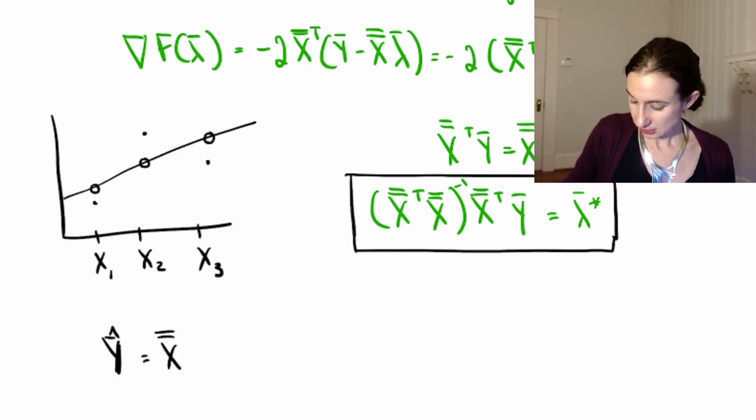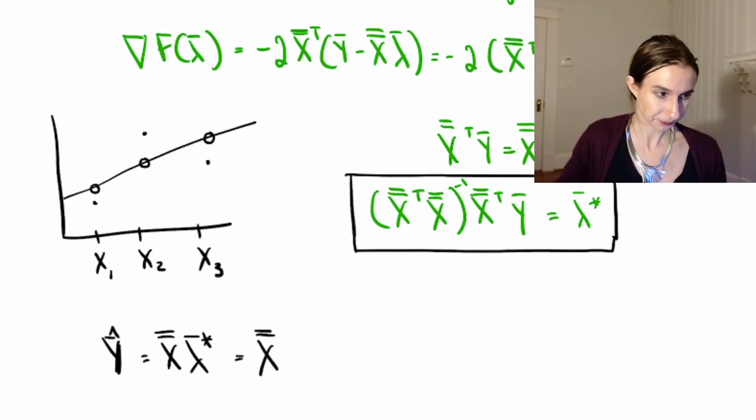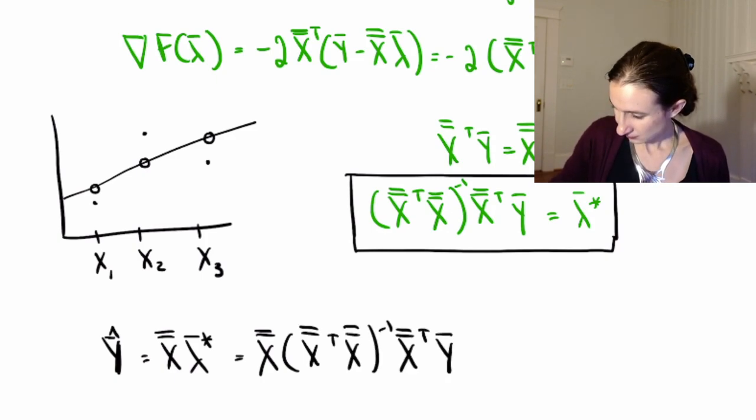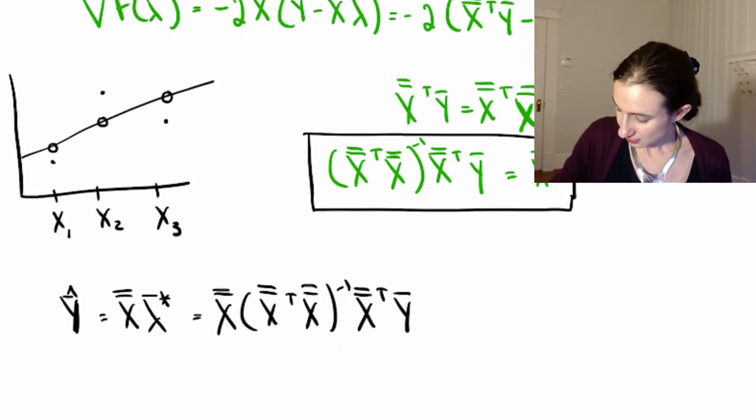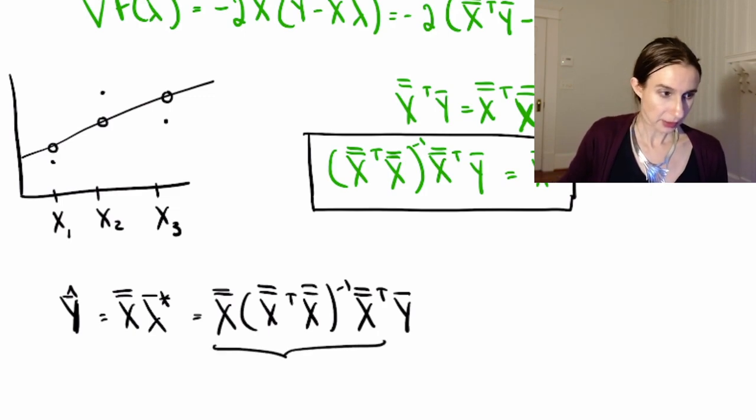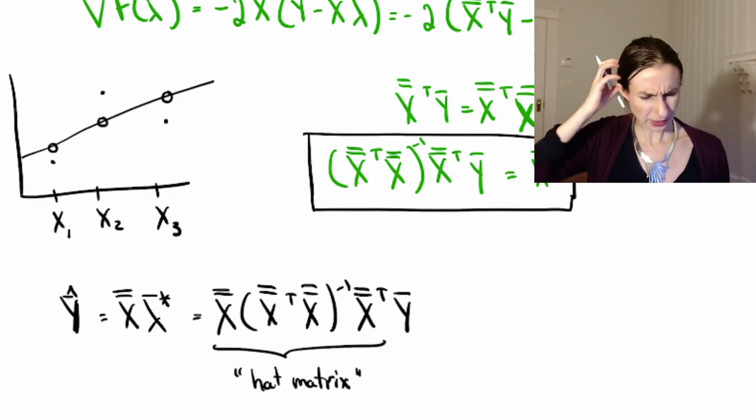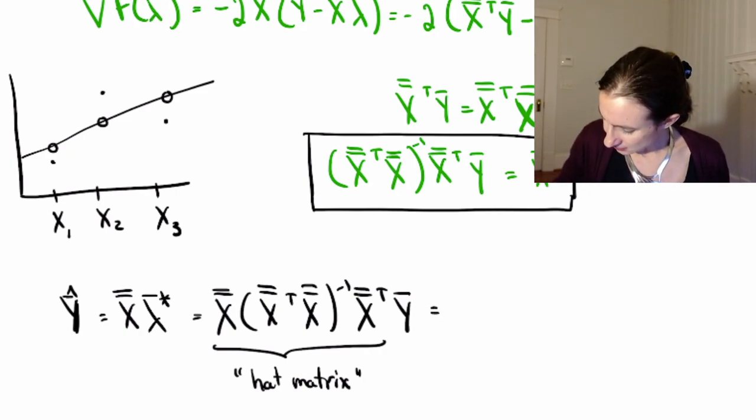So, there's my data matrix times lambda star. So, I'm just going to write down the equation here for lambda star. Cool. And so, this thing, believe it or not, is called the hat matrix. And it really doesn't look like a hat. I'm not sure why it's called a hat, come to think of it. But, it's called h.